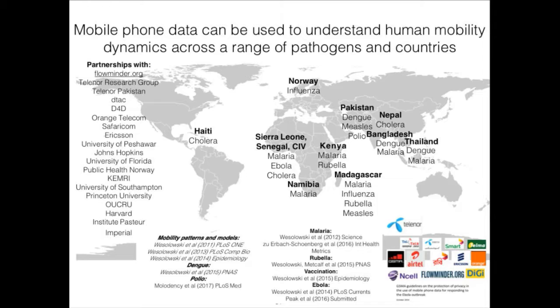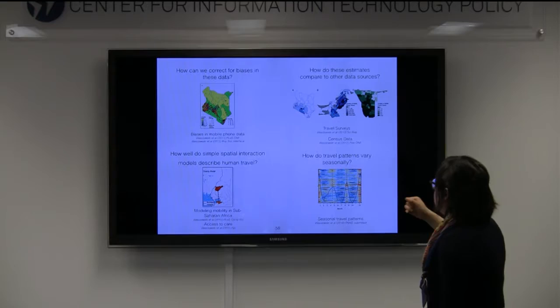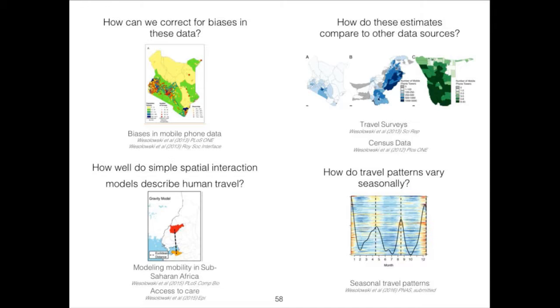Nonetheless, we've still been doing this in lots of different countries for lots of different diseases using a bunch of different collaborations across public health, academia, and mobile phone operators. Some of the basic things we've been doing is trying to look at what are the biases in these data, how they compare to other sources like the census, how we can model these data, and how do they vary seasonally. Now I'm going to talk about two specific disease examples.